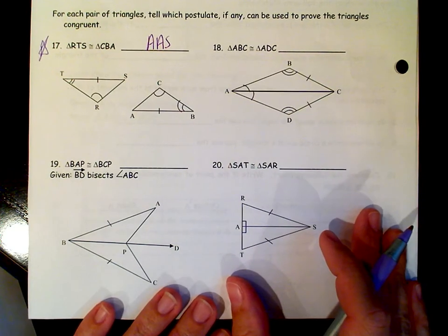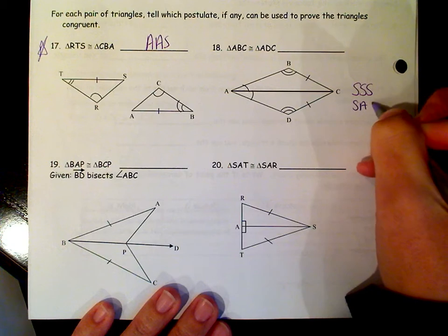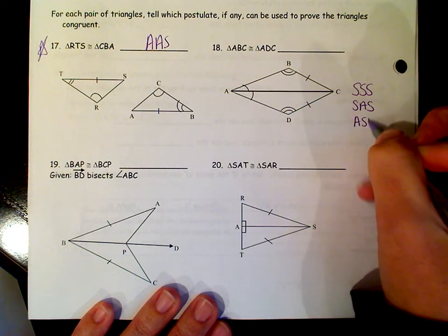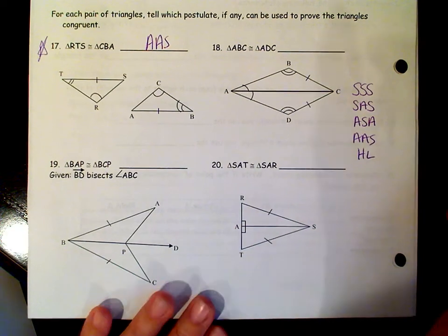Now remember, the four shortcuts are side side side, side angle side, angle side angle, angle angle side, and then HL for right triangles.